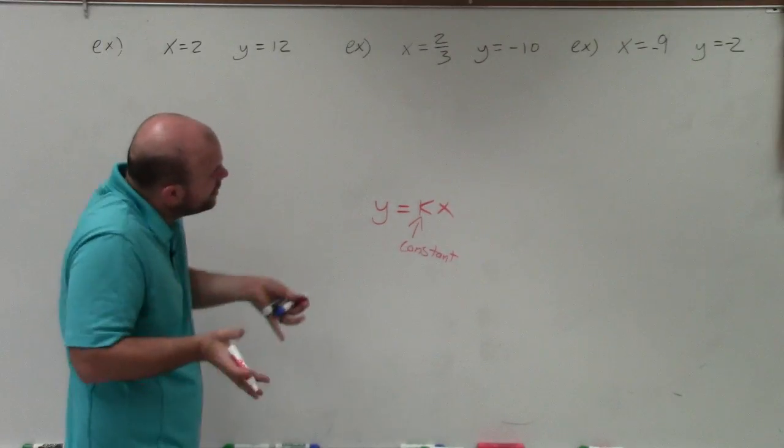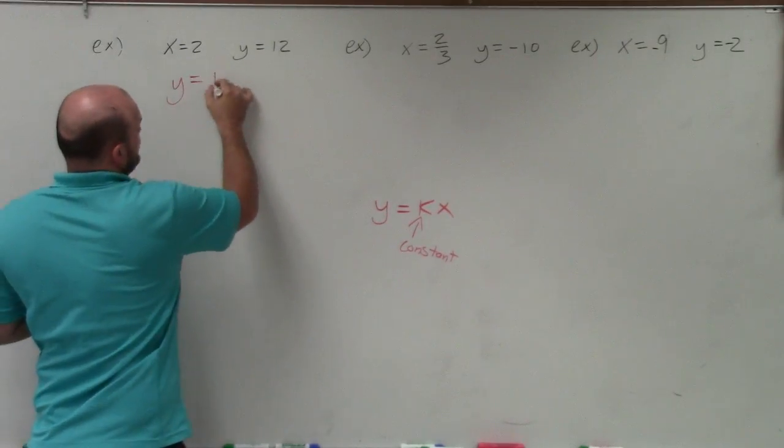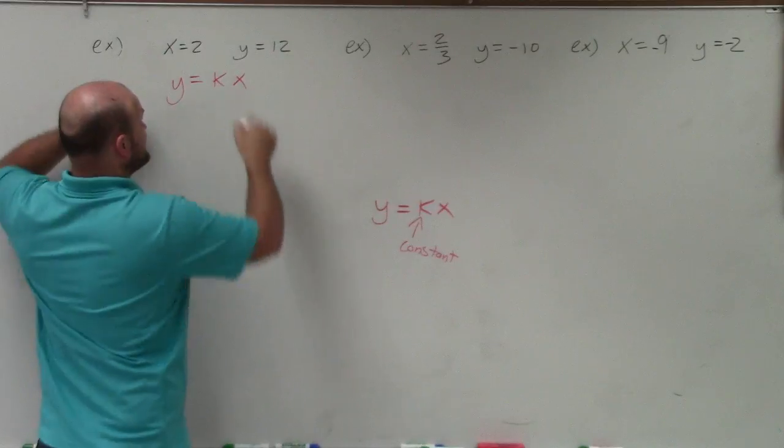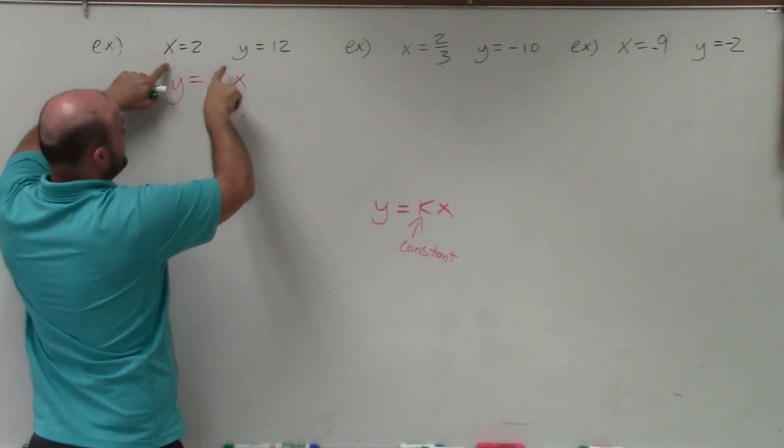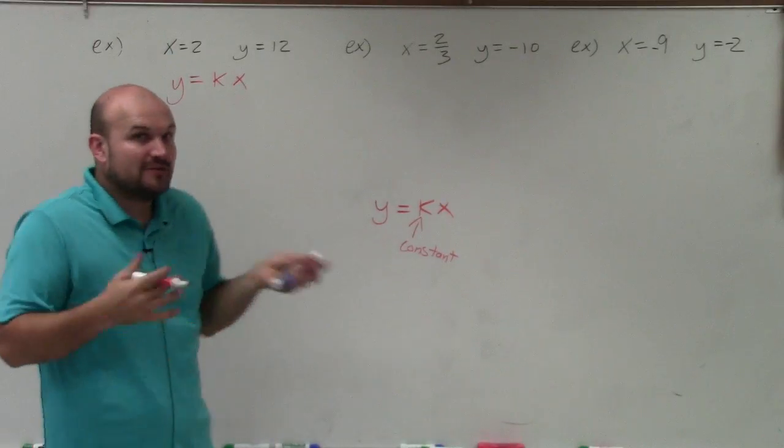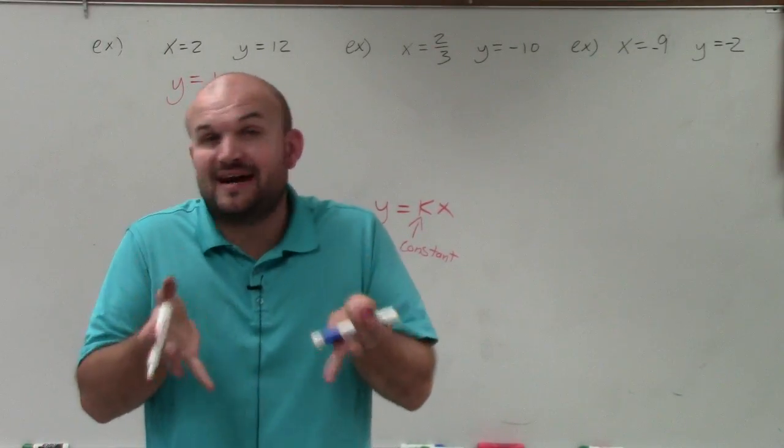So basically, to be able to determine our equation, we're going to write the equation y equals kx. Then you can see that the values that we're given are x and y. And they're asking us to write the equation in the form to find the value of k.